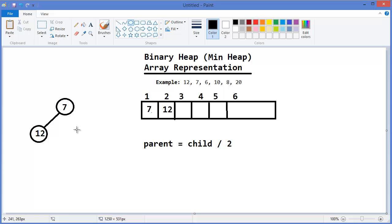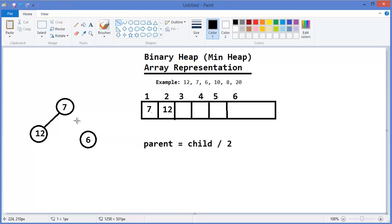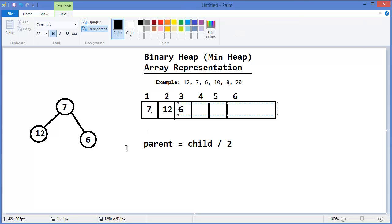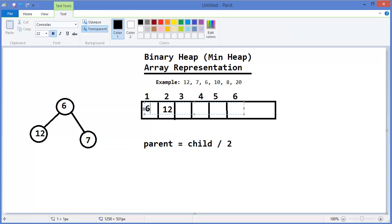Then the next value is 6. Now you can see this doesn't maintain the min heap property. So I need to swap this again, 6 with its parent. That means 3 divided by 2, which is 1. So 6 should come in the first position and 7 should come in position 3. This is 6 and this one is 7.